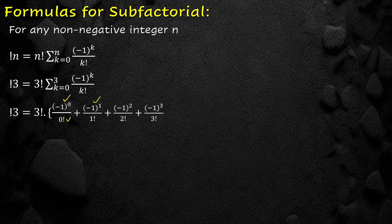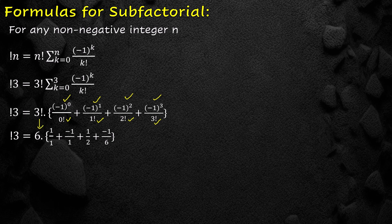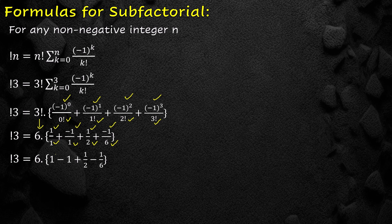We expand the summation and write: minus 1 raised to power 0 over 0 factorial, plus minus 1 raised to power 1 over 1 factorial, plus minus 1 raised to power 2 over 2 factorial, minus 1 raised to power 3 over 3 factorial. Simplifying, sub-factorial of 3 equals 6 into (1 minus 1 plus 1/2 minus 1/6). Canceling +1 and −1, and taking LCM of 1/2 and 1/6, we get 6 into (3 minus 1)/6, which gives sub-factorial of 3 equals 2.